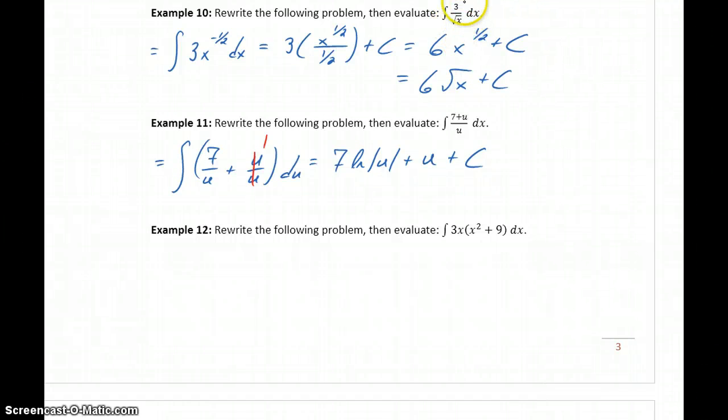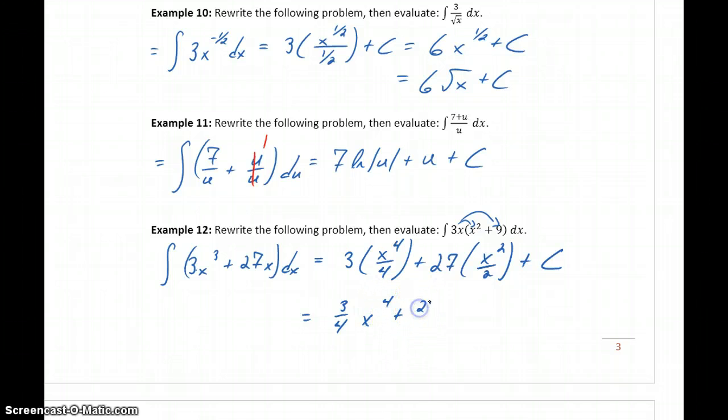So in example 10, we brought something in the denominator up to the numerator, so that then we could integrate. In example 11, we took this fraction, split it up as the sum of two fractions. Now in example 12, what we're going to do is distribute through this expression to rewrite this as 3x cubed, plus 27x. So by first distributing, now we have something that we can integrate term by term. So this will become 3 times x to the 4th over 4, plus 27 times x squared over 2, plus that constant c. We don't get anything that reduces or simplifies here, but we could just rewrite this as 3 4ths x to the 4th, plus 27 halves x squared, plus some constant c.